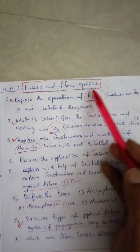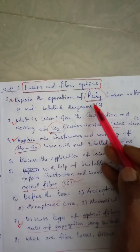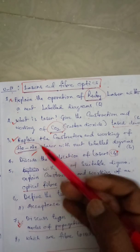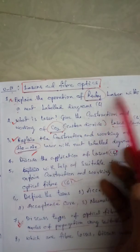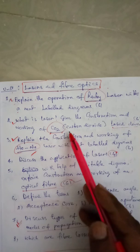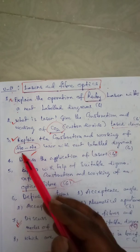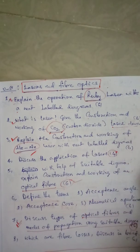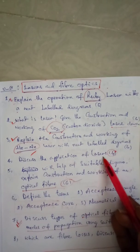For Unit 4 - Lasers and Fiber Optics: there are three key laser questions you must read. First, 'Explain the operation of the ruby laser with a neat labeled diagram.' Second, 'What is a laser? Give the construction and working of a carbon dioxide laser device.' Third, 'Explain the construction and working of a helium-neon laser with neat labeled diagrams.' Each carries six marks. The fourth question is 'Discuss the applications of lasers.'